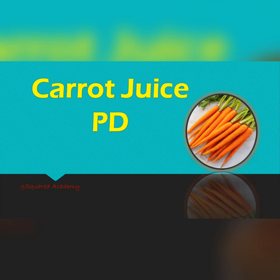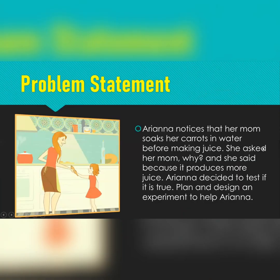We're continuing our Planning and Designing series today, and today we're going to be looking at a carrot juice PD. Without further ado, let's dive right in. The problem statement: Ariana notices that her mom soaks her carrots in water before making juice. She asked her mom why and she said because it produces more juice. Ariana decided to test if that was true. You're going to plan a lab to help Ariana find out.